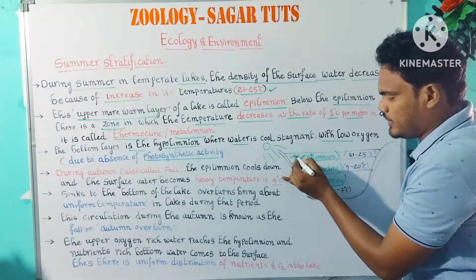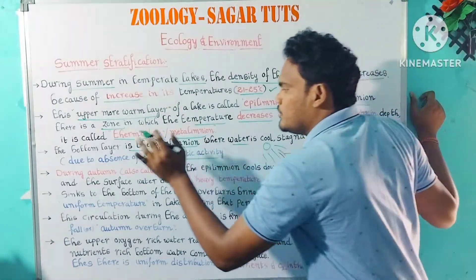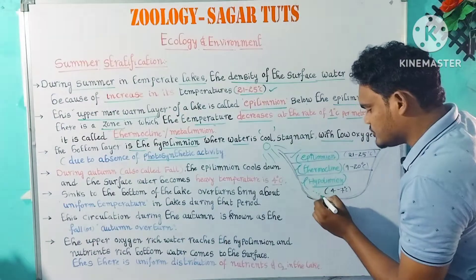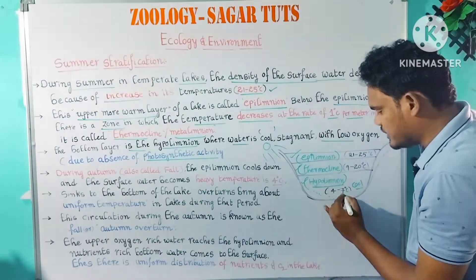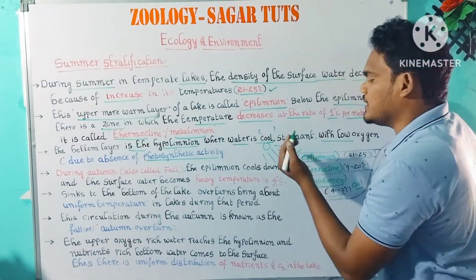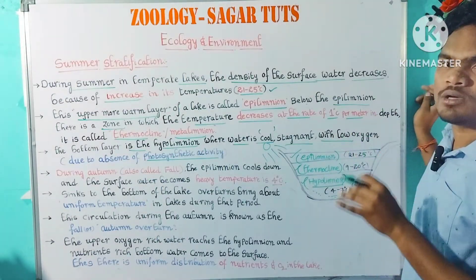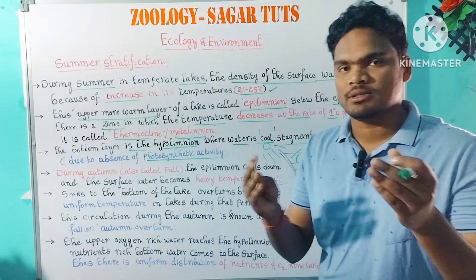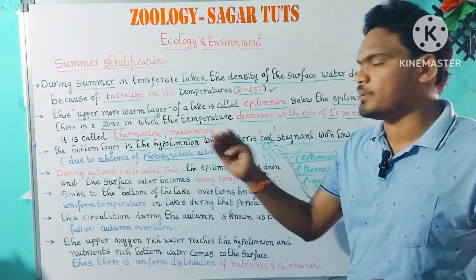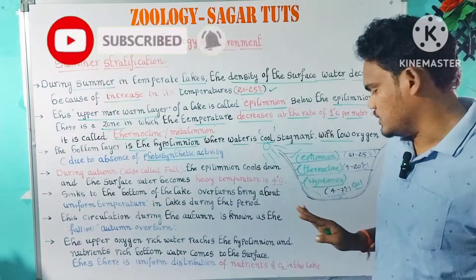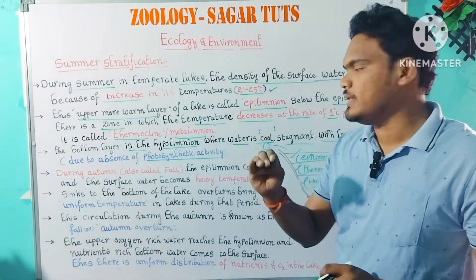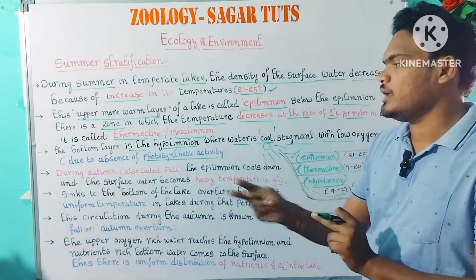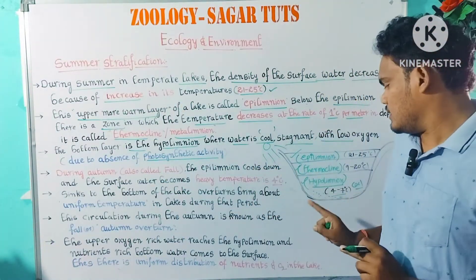The bottom layer is the hypolimnion. The water here is cool and stagnant with low oxygen due to the absence of photosynthetic activity. The temperature is 4 to 7 degrees centigrade. It is cool and stagnant with low oxygen, with no photosynthesis activity.